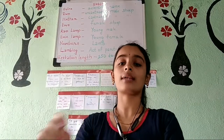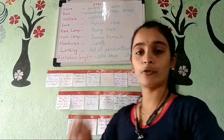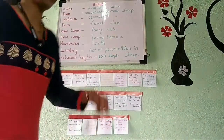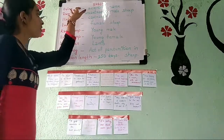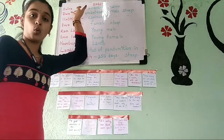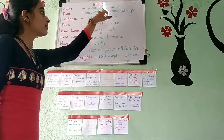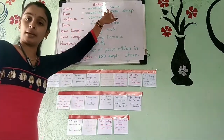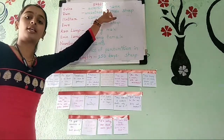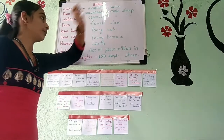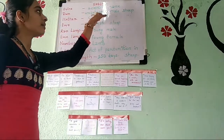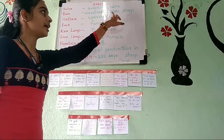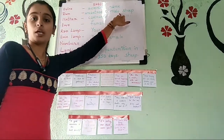At first, let us study about sheep. The scientific name given to sheep is ovine. Next, ram — ram is an uncastrated male sheep.